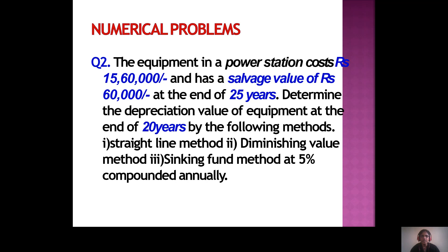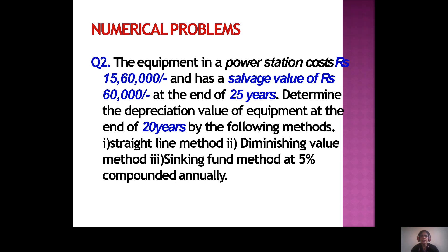Next problem: equipment in a power station costs 15,60,000 and has a salvage value of 60,000 at the end of 25 years. Determine the depreciation value of the equipment at the end of 20 years using: straight line method, diminishing value method, and sinking fund method at 5% compounded. For straight line, annual depreciation = (P − S) / N = (15,60,000 − 60,000) / 25 = 60,000.